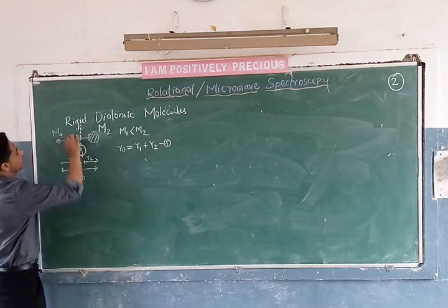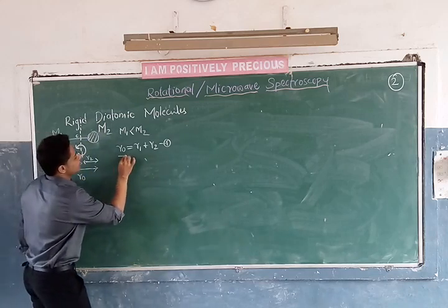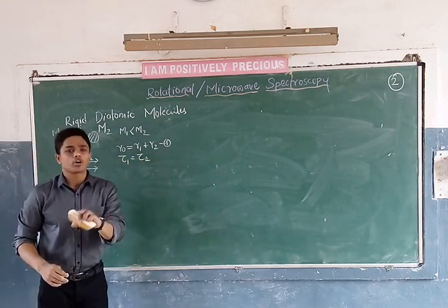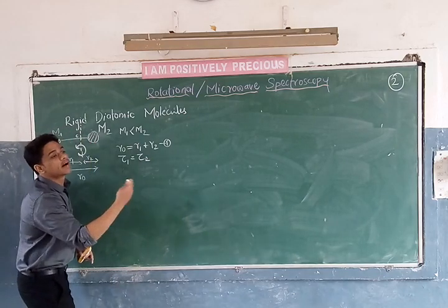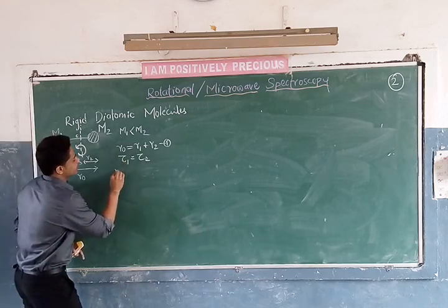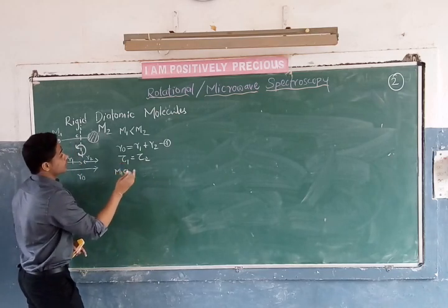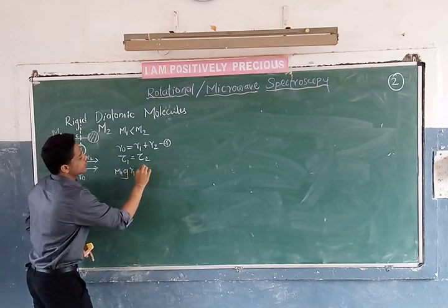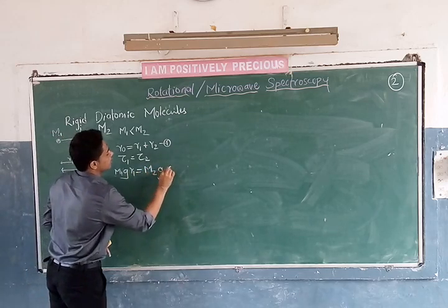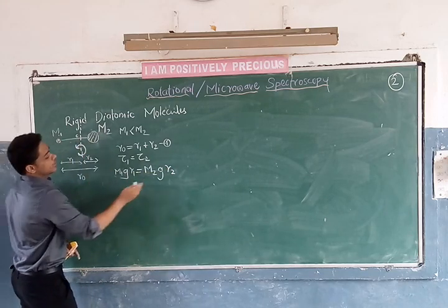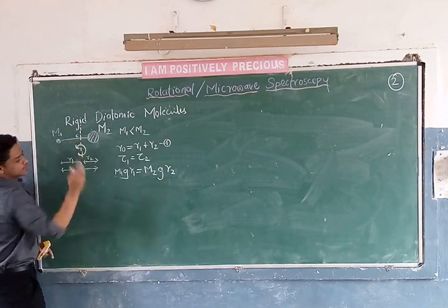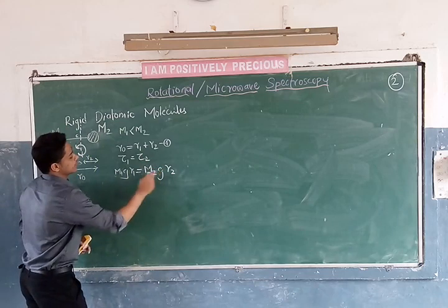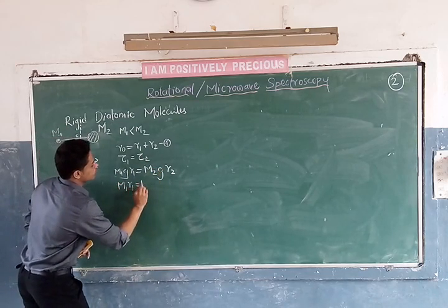The torque acting at M1 is nothing but the torque acting at M2. Torque is nothing but force into displacement. Force can be written as mass into acceleration. So torque at M1 is M1 into g into R1, and torque at M2 is M2 into g into R2. Since g is equal on both sides, we can cancel it from both sides. Hence we get M1·R1 equals M2·R2.